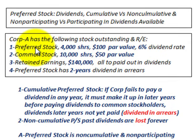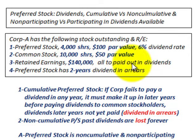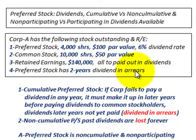Corporation A has preferred stock of 4,000 shares at $100 par value with a 6% dividend rate. They also have common stock of 10,000 shares at $50 par value. Retained earnings are $140,000 and all will be paid out in dividends for this example. The preferred stock also has two years of dividends in arrears.